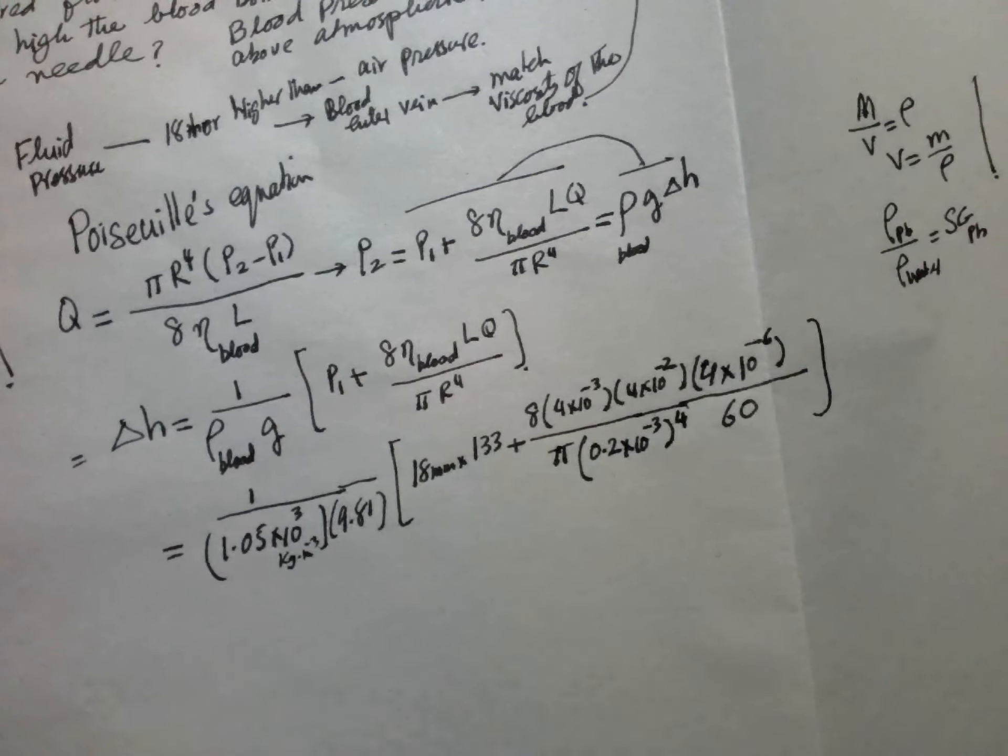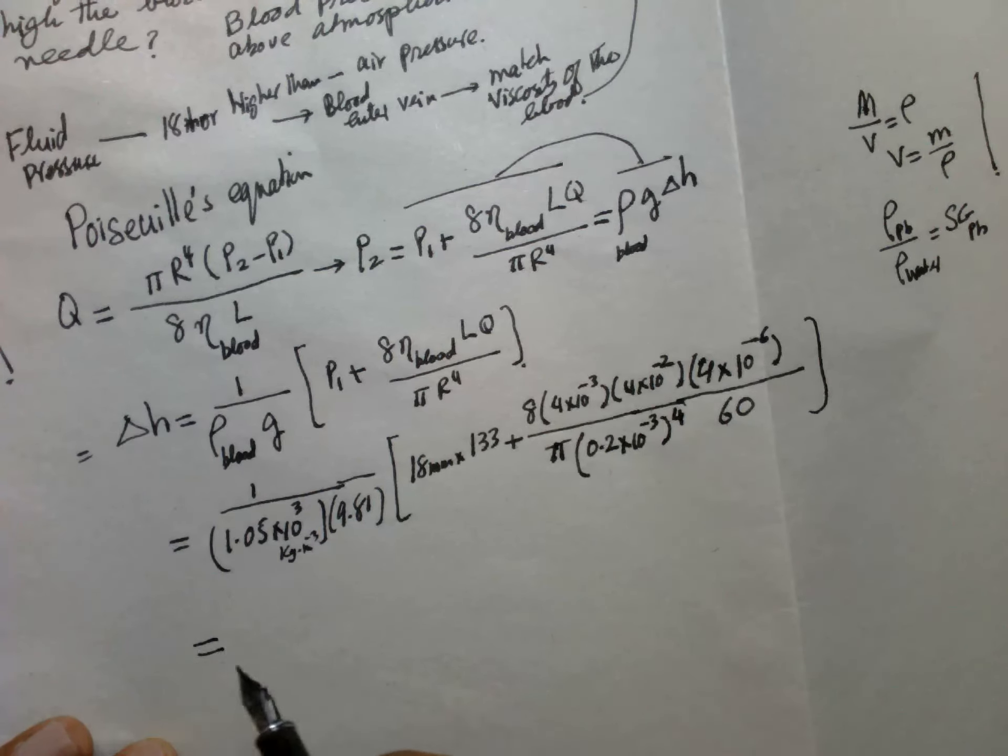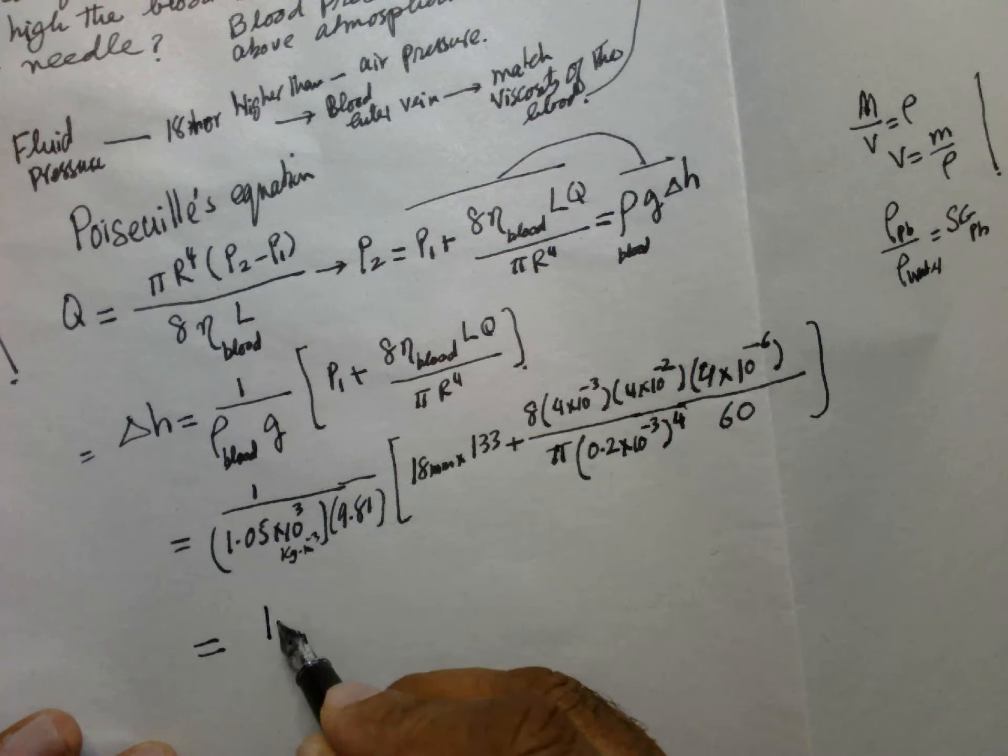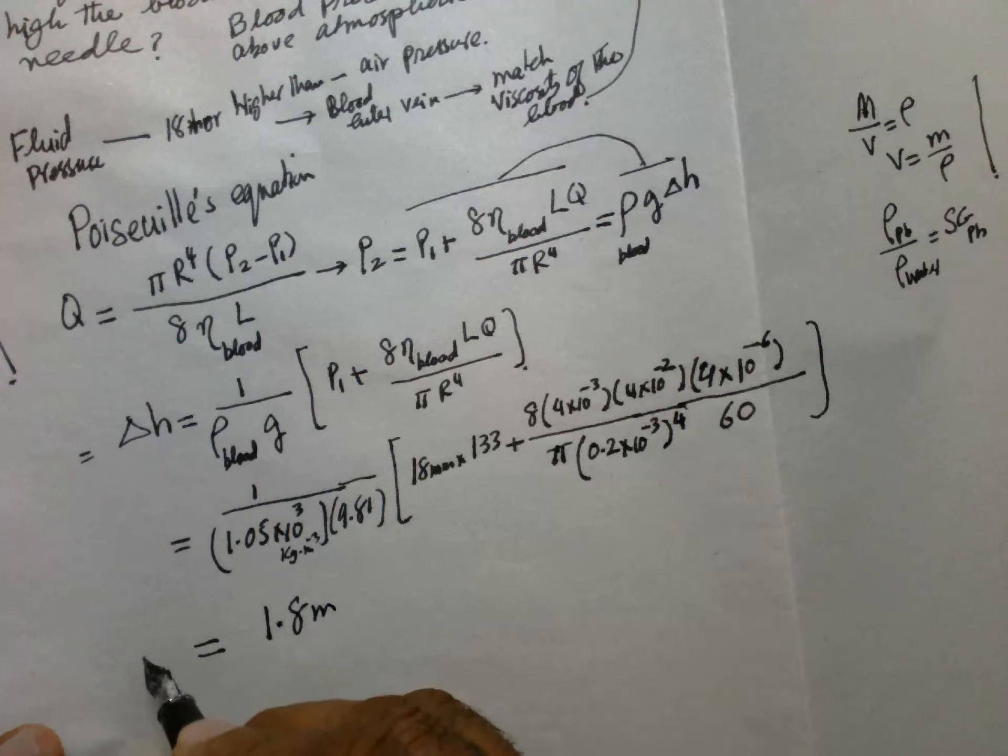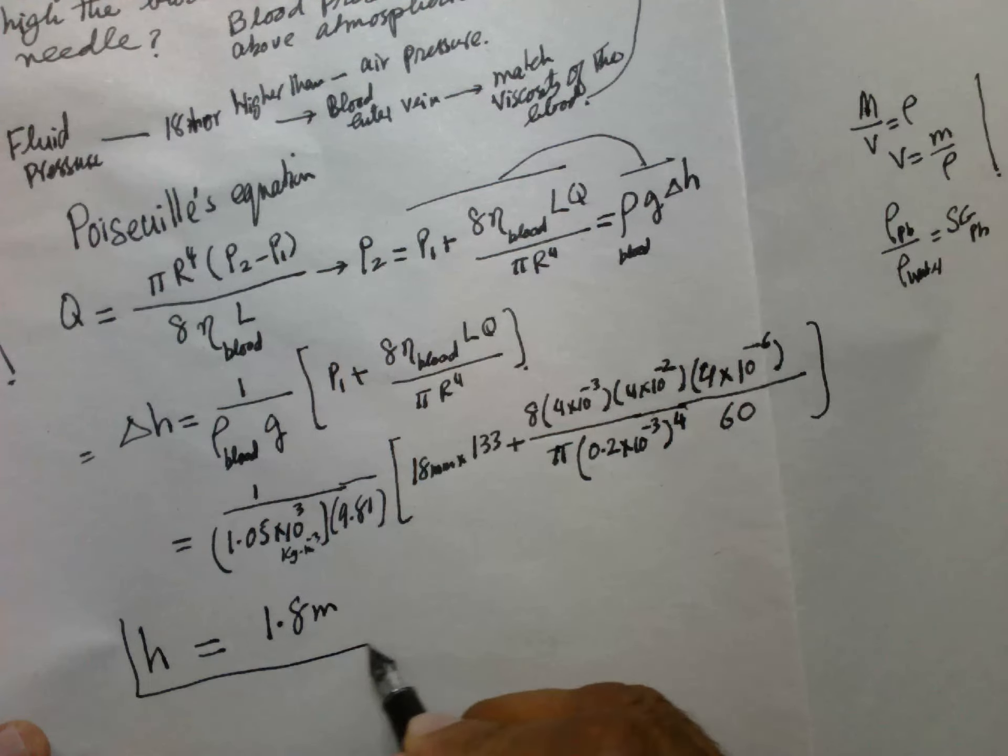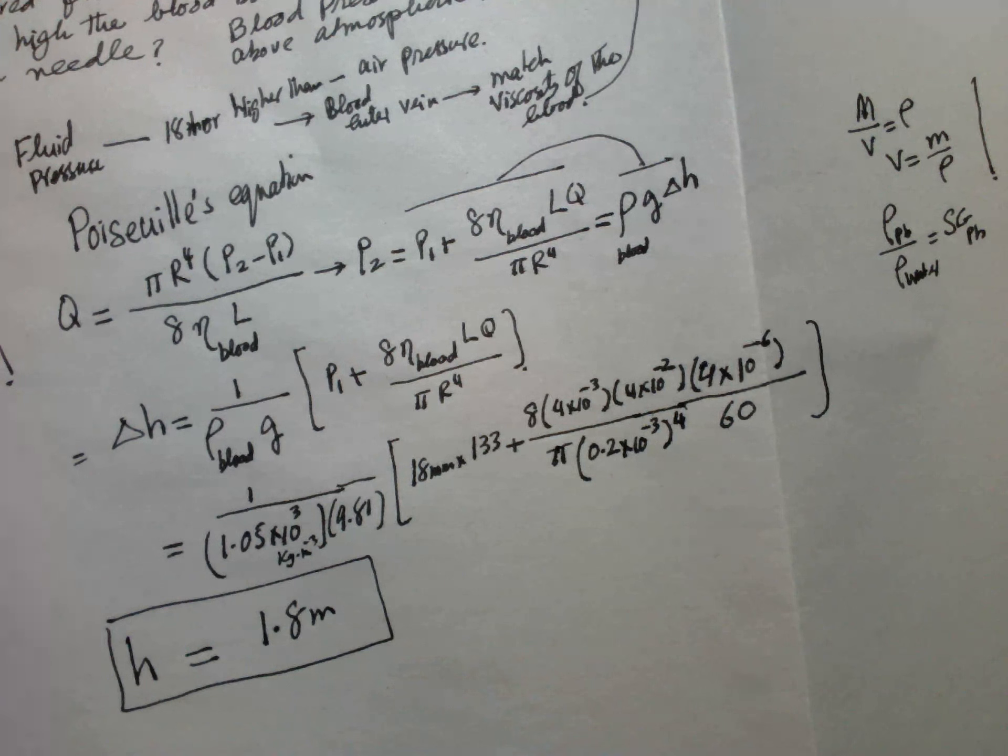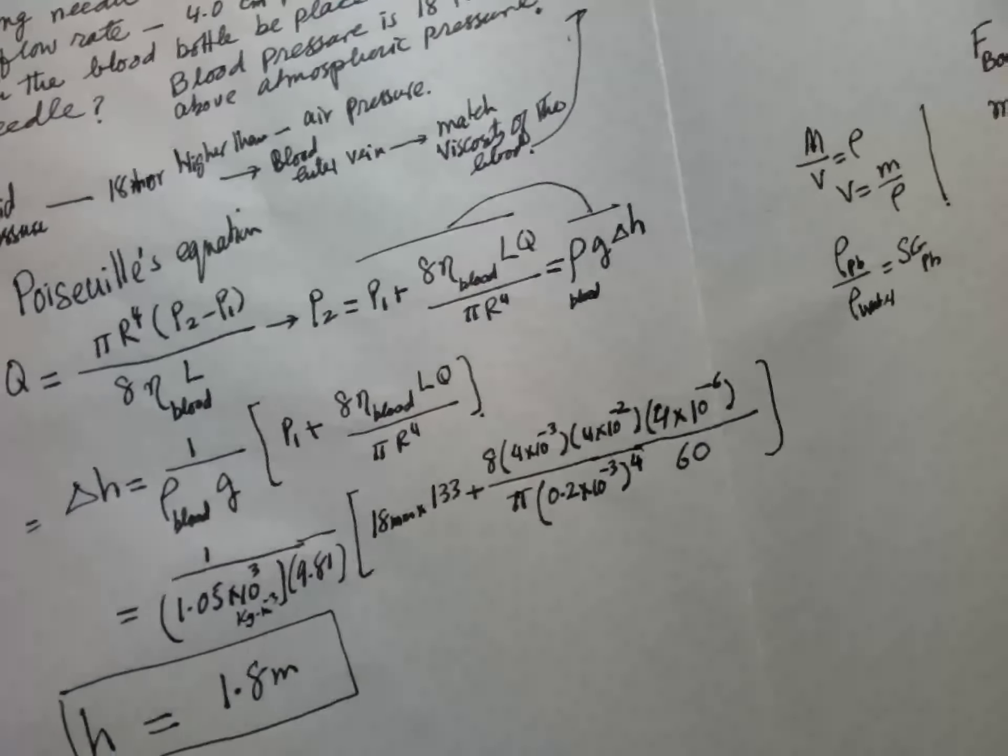And if we simplify this, the answer will be 1.8 meters, which is h. So the blood bottle should be 1.8 meters high above the position of the syringe in order to match the flow and viscosity of the blood inside the human body. This is the answer to this question.